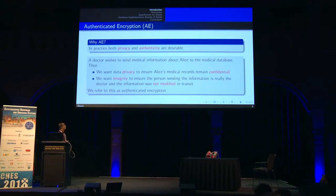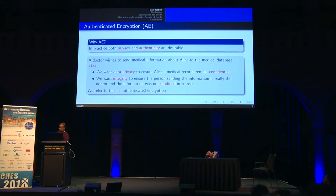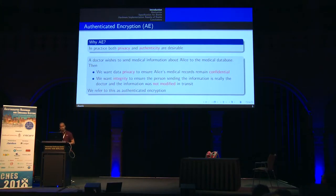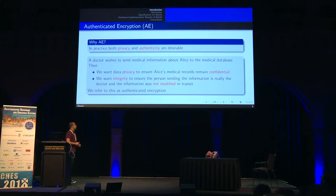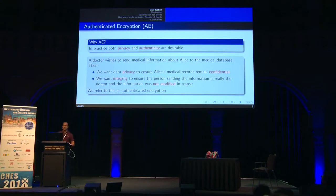The question is: why authenticated encryption? There are several applications where we need both confidentiality and integrity of our data. For example, suppose a doctor wishes to send some medical information about Alice. Alice may not want to disclose her medical records, so we need privacy. We also want integrity to ensure the person sending the information is actually the doctor, and the information has not been modified in transit. For this type of application, authenticated encryption is the most convenient choice.